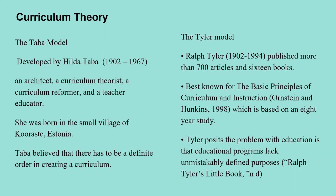Tyler recommended that curriculum planners identify general objectives by gathering data from three sources: one, the learner; two, contemporary life outside the school; and three, subject matter. After identifying numerous general objectives, the planner will refine them by filtering through two screens: the philosophical screen and the psychological screen. The Tyler Model's general objectives, once they successfully pass through the two screens, become what is known as the instructional objective. Curriculum objectives indicate what behavior is to be developed in a given content area.